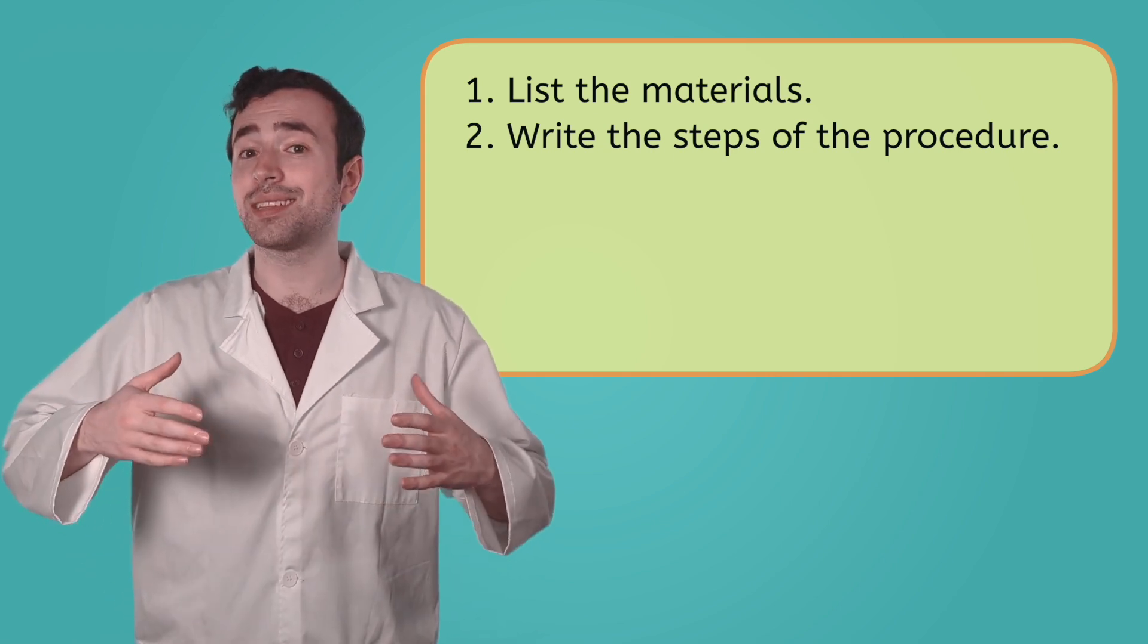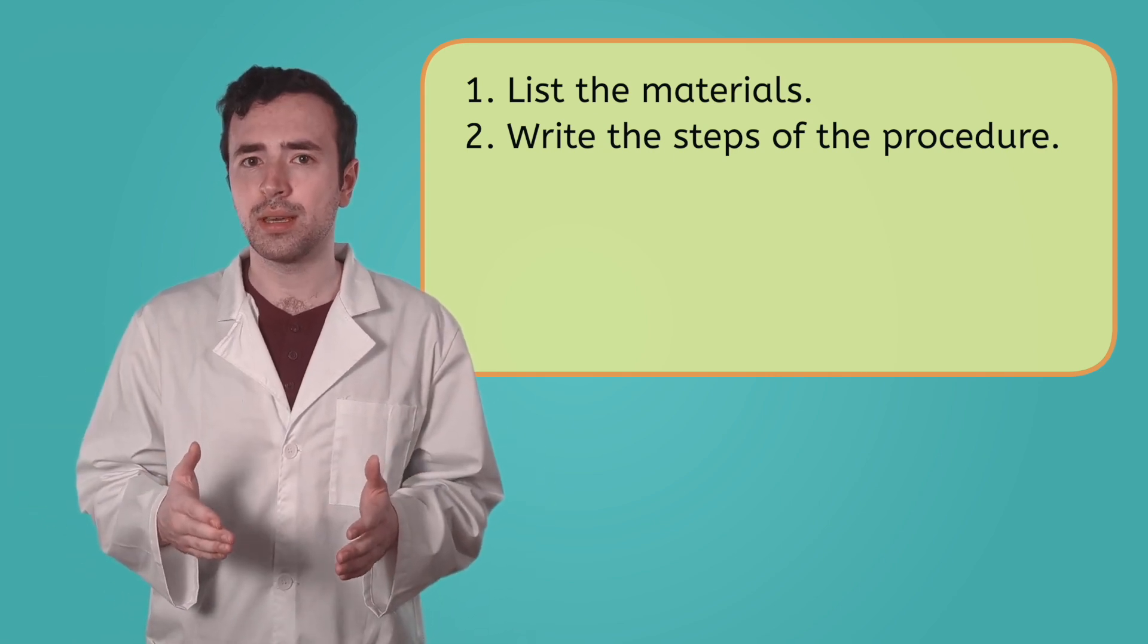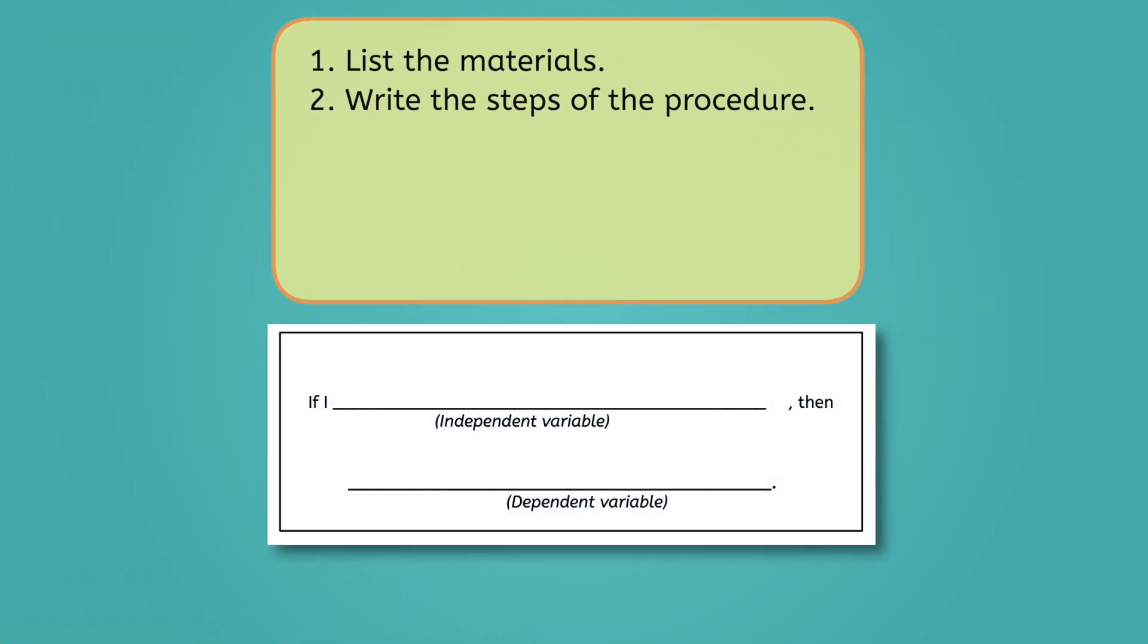Think about what needs to stay constant in your experiment, and what needs to change. Once all your steps are written out, record your hypothesis. Be sure to include the effect of your independent variable on your dependent one. What are you changing? What effect do you think that change will cause?